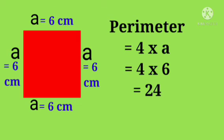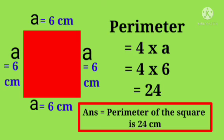Therefore, perimeter equals to 4 into a equal to 4 into 6 equal to 24. Answer: Perimeter of the square is 24 centimeters.